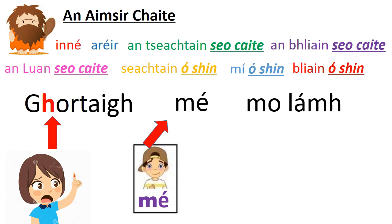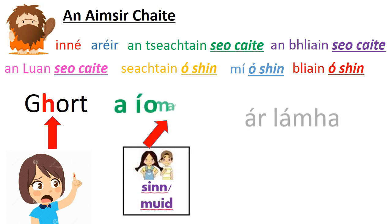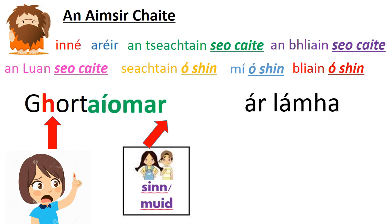Now look at this one: Ghortaigh mé mo lámh — I hurt my hand. Again, that's a second conjugation verb — dhá shiolla — two syllables: Gart-aigh. I have to get rid of that second syllable, away it goes, and the ending we put on is 'íomar'. Ghortaíomar ár lámha — we hurt our hands. Look at the vowels: that's a caol vowel, and that's a caol vowel — caol le caol, tá siad ceart go leor.